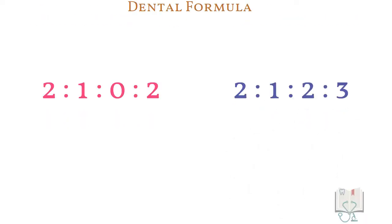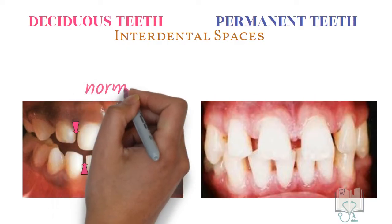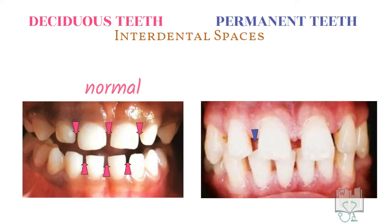In deciduous dentition, interdental spaces are considered normal, whereas in permanent dentition, interdental spacing is not considered normal and requires correction.